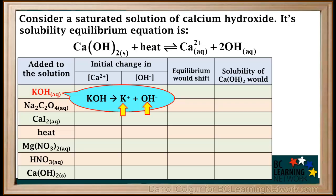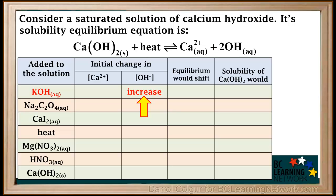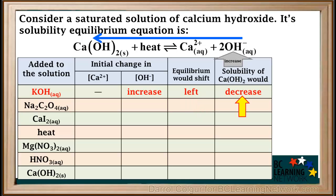We'll start with KOH, which is an alkali metal compound, so it dissociates completely into K⁺ and OH⁻ ions. K⁺ is a spectator ion so we omit it. Adding KOH will initially increase the concentration of OH⁻. There's no initial change in the concentration of Ca²⁺. Increasing the concentration of OH⁻ will cause the equilibrium to shift to the left, which would produce more solid and decrease the solubility of calcium hydroxide.